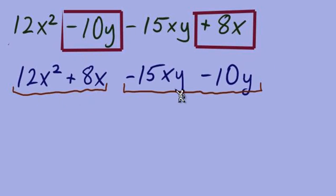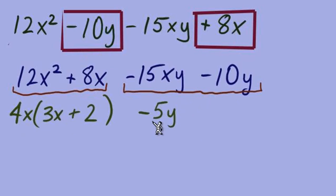So if we pair up the first two and the last two this time, we can find a GCF from the first pair 4x in parentheses 3x plus 2. From the second pair of terms we have a GCF negative 5y and in parentheses from this first term we'll have 3x and from this last term we'll have positive 2.